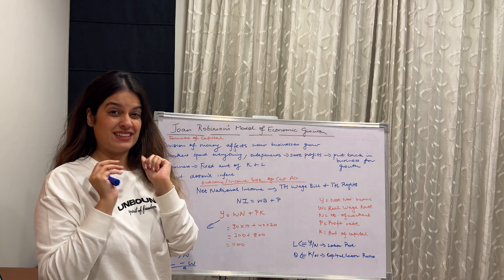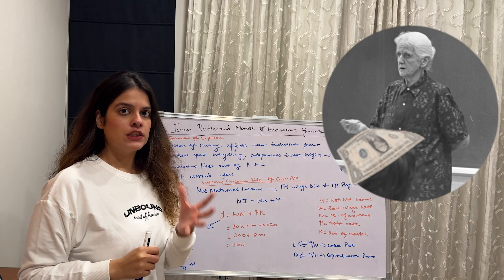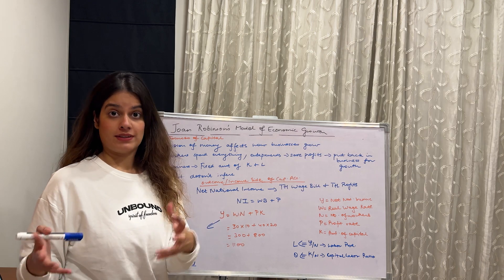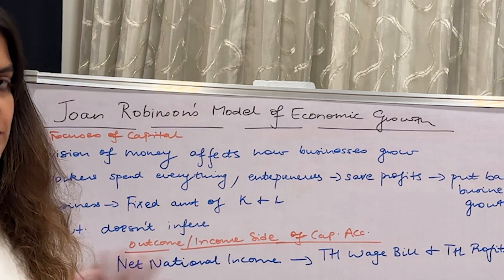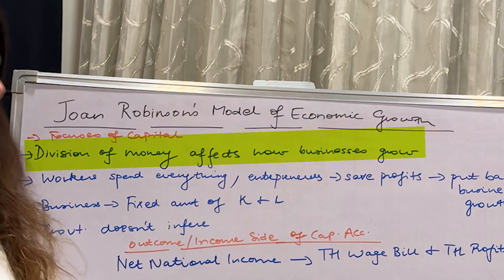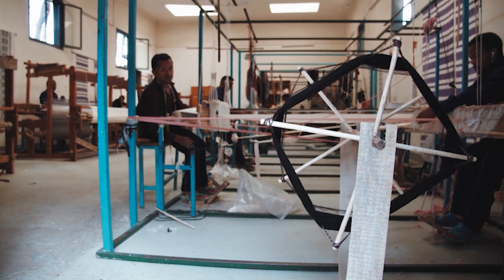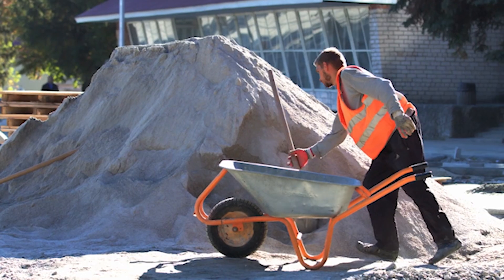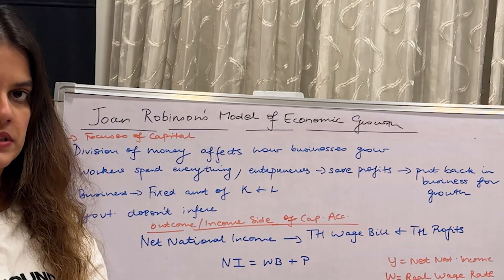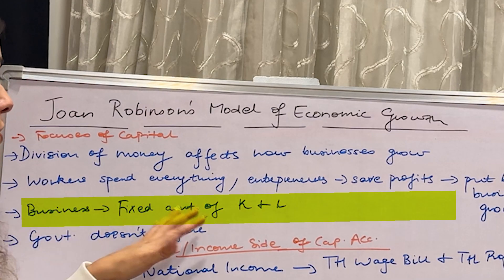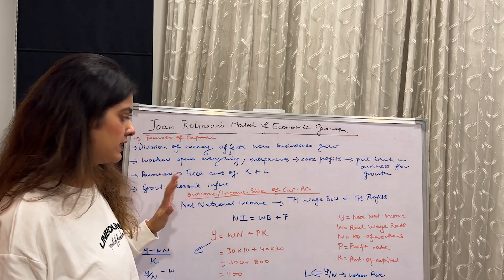Moving ahead to the crux of this video: Joan Robinson focused a lot on capital, which is why this model is also called Joan Robinson's model of capital accumulation. She said let us talk in two terms — the division of money affects how businesses grow. We've established that money is divided between entrepreneurs and laborers. Workers spend everything and can't save, but entrepreneurs tend to save their profit and put it back in the business for economic growth. Businesses use a fixed amount of capital and labor, and since it's a laissez-faire capitalist economy, government doesn't interfere.